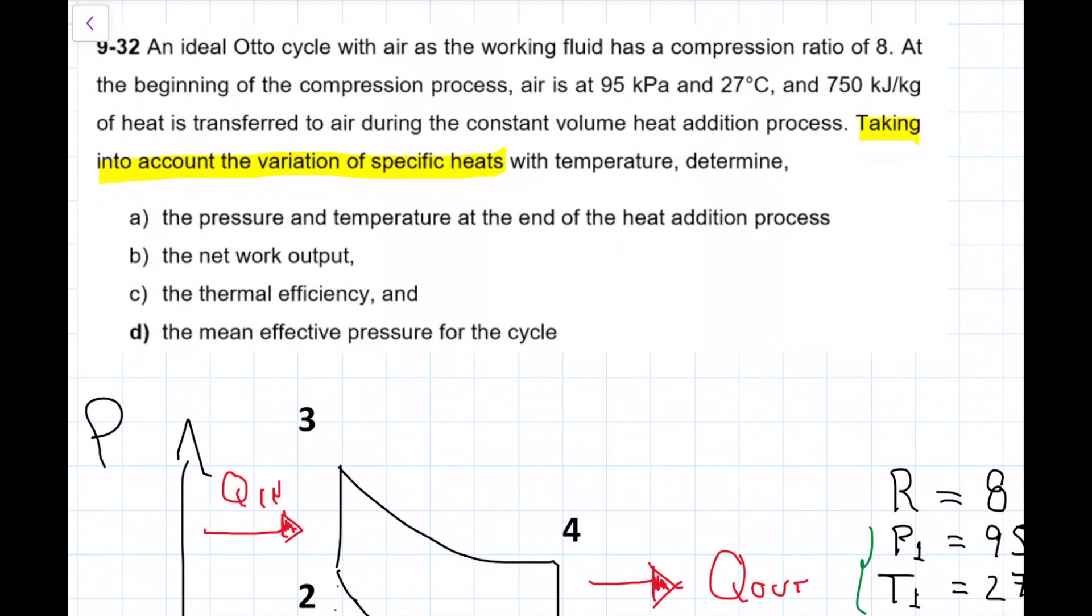We have an ideal Otto cycle with air as a working fluid and it has a compression ratio of 8. At the beginning of the compression process air is at 95 kPa and 27 celsius and 750 kJ per kg of heat is transferred to the air during the constant volume heat addition process.